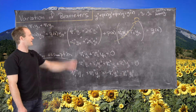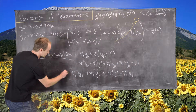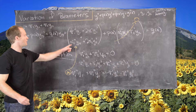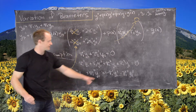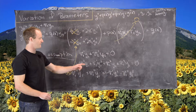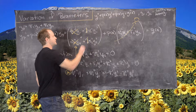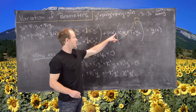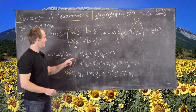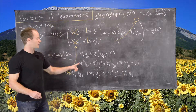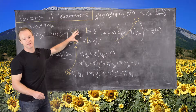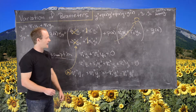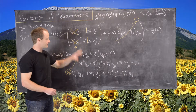Substituting this back into the differential equation allows us to cancel the second-derivative terms and reduce the coefficients, so the original assumption eliminated the p(x) terms and its derivative simplified the second-derivative terms.